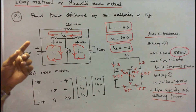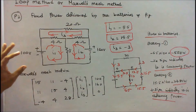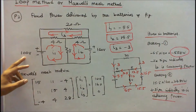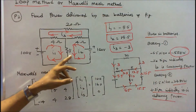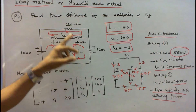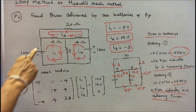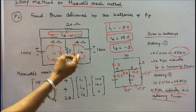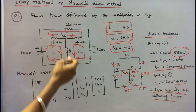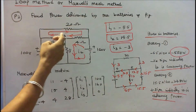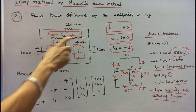Problem 2: Find the power delivered by the batteries. The circuit has 2 batteries and 4 resistors. Battery 1 is 100 volts, battery 2 is 160 volts. The resistors are 11 ohm, 4 ohm, 4 ohm, and 20 ohm. There are 3 loops — loop 1, loop 2, loop 3 — with currents I1, I2, I3 flowing in the clockwise direction, positive to negative.